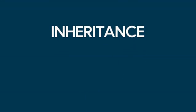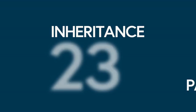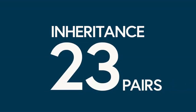DNA is made up of 23 pairs of chromosomes. 22 of these are known as autosomal chromosomes, while the 23rd pair are the sex chromosomes. It is the inheritance of the sex chromosomes that we will focus on here.